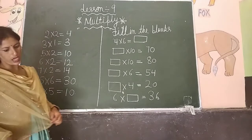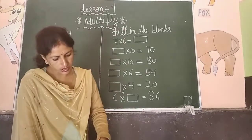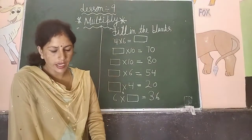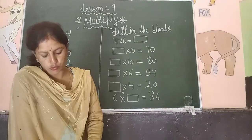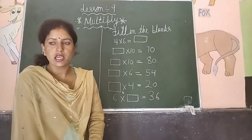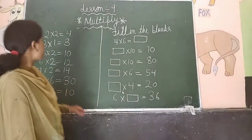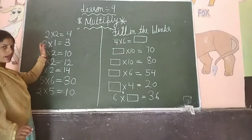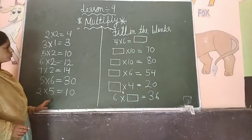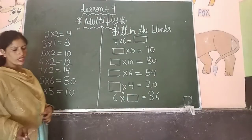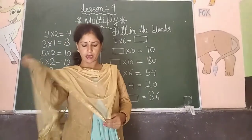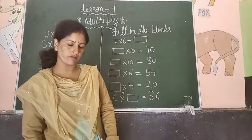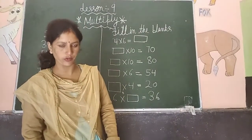So the first part answer is: 2 fives are 10. You can fill the remaining parts in the book as well. In your notebook, you will only do the questions I have solved. The remaining questions, if you want, you can fill in the book too. Understood?